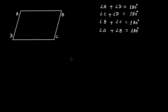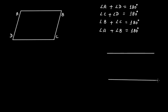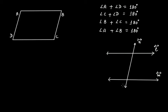You can prove this using a simple property of two parallel lines with a transversal. If we have two parallel lines L and M, and a transversal line N intersecting them, we can identify pairs of co-interior angles — that is, internal angles on the same side of the transversal.